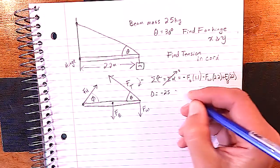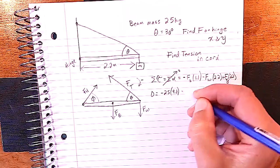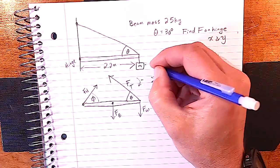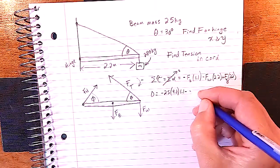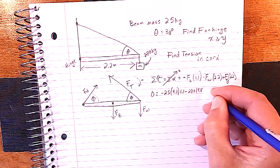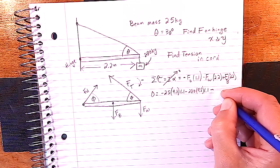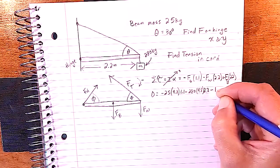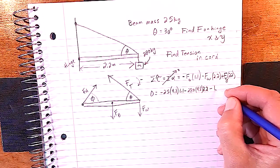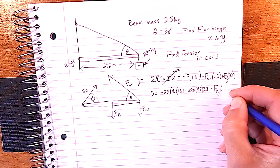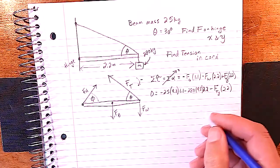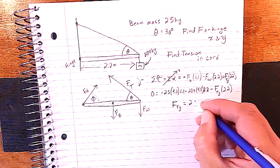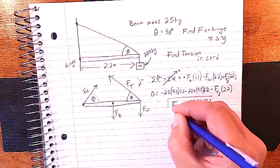Setting up: zero equals minus 25 times 9.8 at 1.1 meters for the beam, minus 280 times 9.8 at 2.2 meters for the hanging mass, plus the y-component of tension at 2.2 meters. With only one unknown we solve for the y-component of tension, which comes out to 2866.5 newtons.